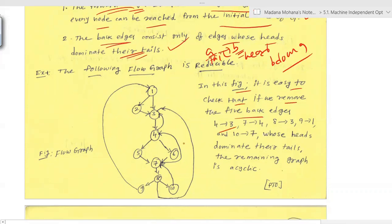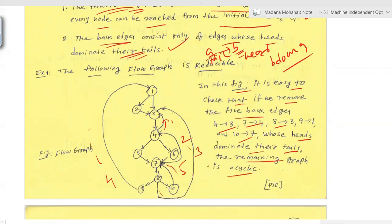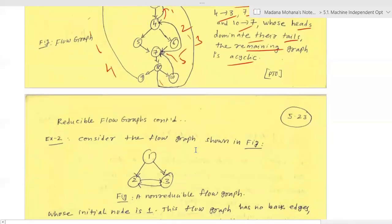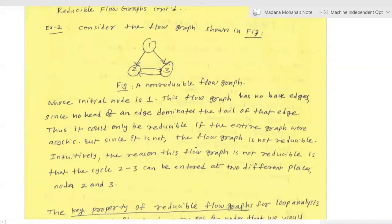In that flow graph, removing the five back edges — 4→3, 7→4, 8→3, 9→1, and 10→7 — whose heads dominate their tails leaves an acyclic graph, confirming reducibility. As a contrasting example, a non-reducible flow graph has nodes where cycles like 2→3→2 can be entered at two different places (nodes 2 and 3), so no head of any edge dominates the tail of that edge.